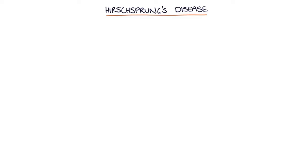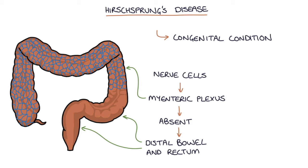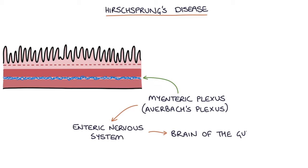Hirschsprung's disease is a congenital condition where the nerve cells of the myenteric plexus are absent in the distal bowel and rectum. The myenteric plexus, which is also known as Auerbach's plexus, forms the enteric nervous system. It's the brain of the gut.